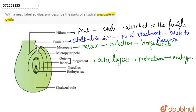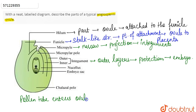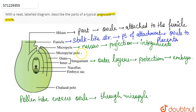The micropyle is the point where the pollen tube enters the ovule. Basically, the pollen tube enters the ovule for fertilization through the micropyle. The pole at the micropylar end is known as the micropylar pole.